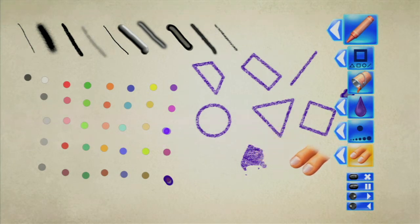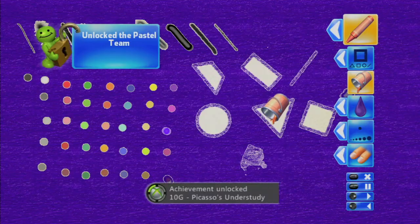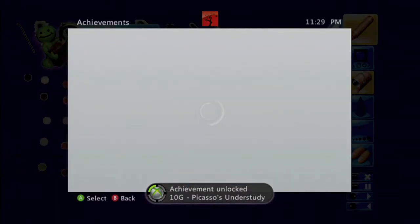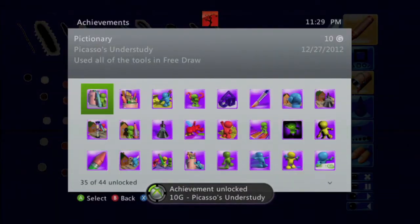And then the final tool you want to use is the bucket, which is the fill. Just fill in a white area and you should get the achievement for 10 gamer score. And that's all there is to it.